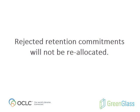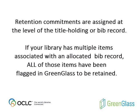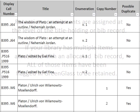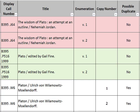A couple of final details. Retention commitments are determined at the level of the title holding, or BIB record. If your library has multiple items associated with an allocated BIB record, all of those items have been flagged in GreenGlass to be retained. In the case of multi-volume sets, this is exactly as it should be — you are expected to retain all of the volumes in the allocated set.